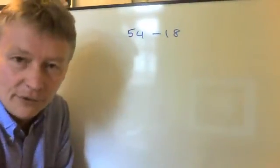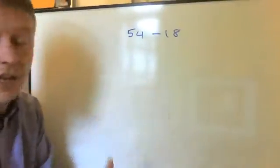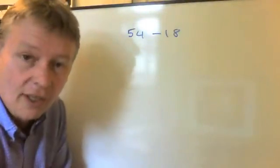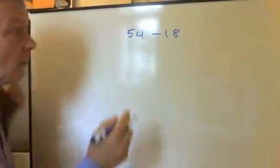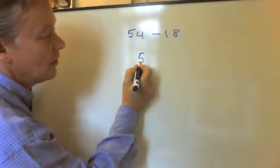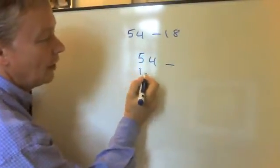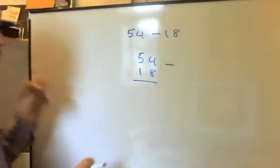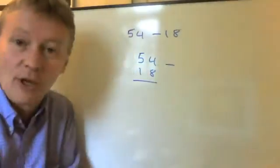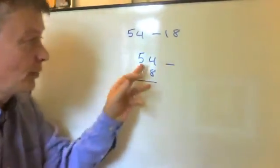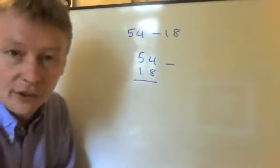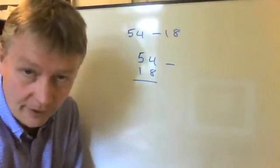There are, however, a couple of different methods of doing the same sum. And one of the most popular is using column subtraction. And what we do is we put the two numbers, one above the other, to make sure the 4 and the 8 which are both units are above each other and the 5 and the 1 which are both tens are above each other.